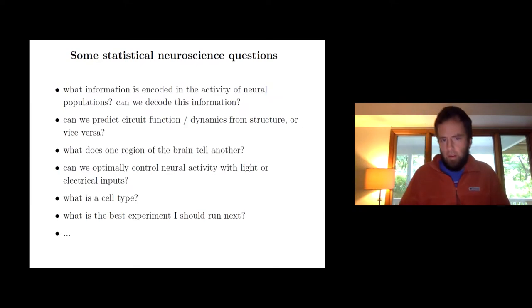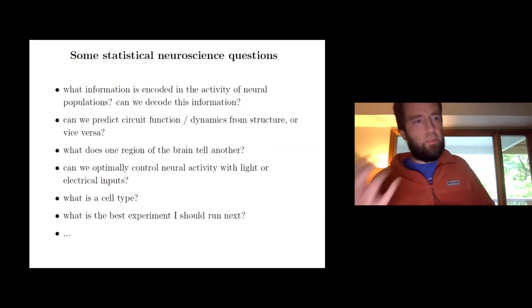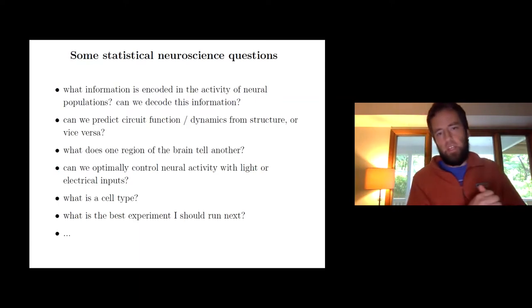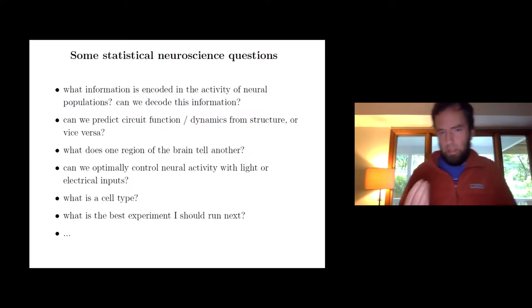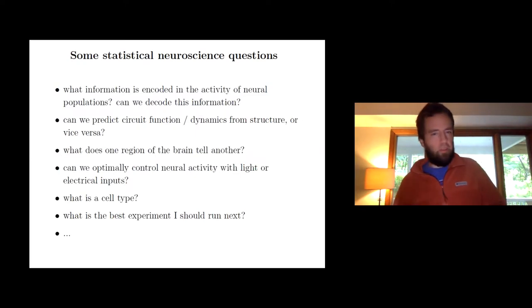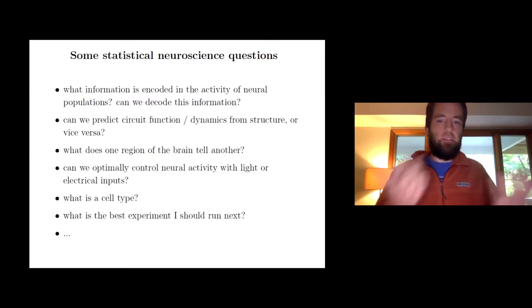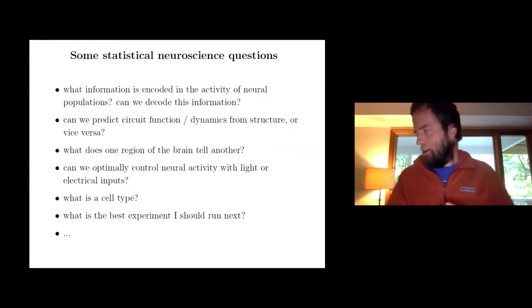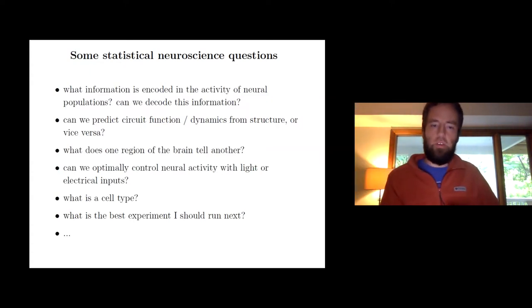That brings up a really interesting real-time optimal control problem. Can I record some activity, figure out what's going on in that circuit, and then optimally perturb that circuit to behave in a way that I want, or to optimally figure out what's connected to what? There are also more basic questions: what is a cell type? How do I determine cell types from morphology, molecular information, and functional information? What is the best experiment I should run next? If you bring to bear the technology of optimal experimental design, you can do interesting things.